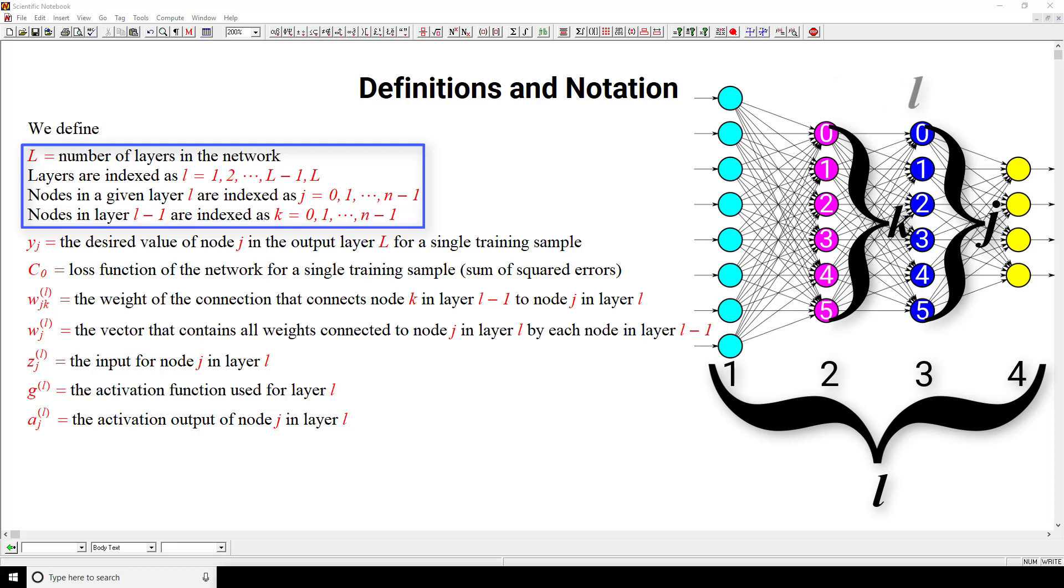When we're referring to a layer l, the indices that we're going to be using to refer to those nodes are going to be j indexed. And when referring to the layer l minus 1 that's directly preceding l, the nodes in that layer are going to be k indexed.